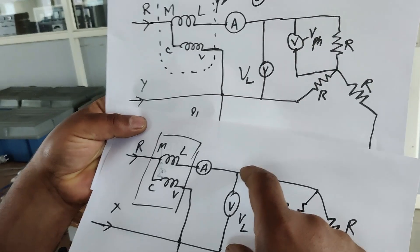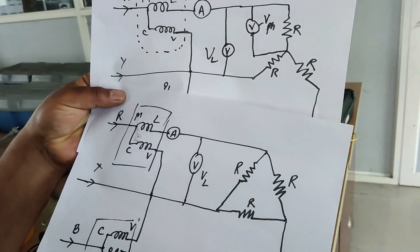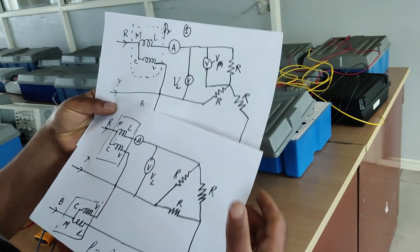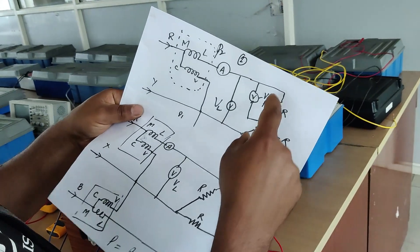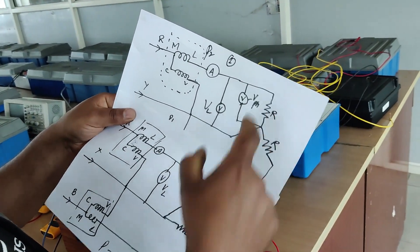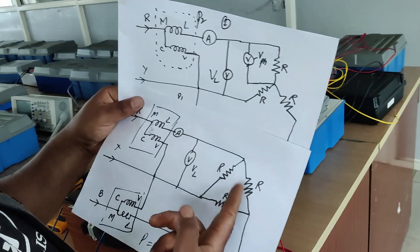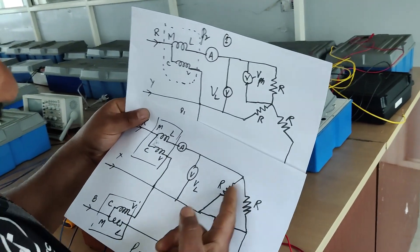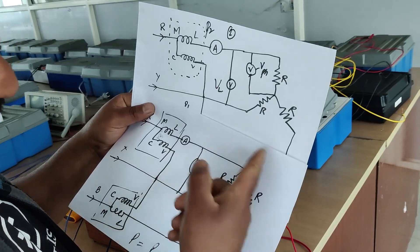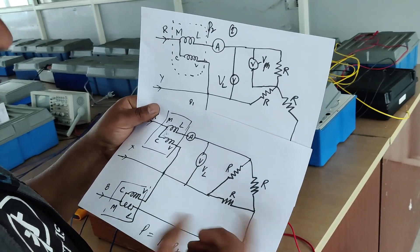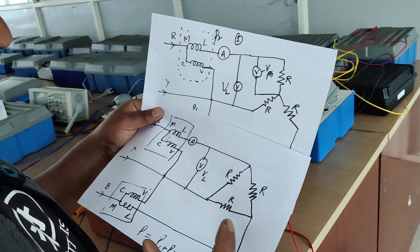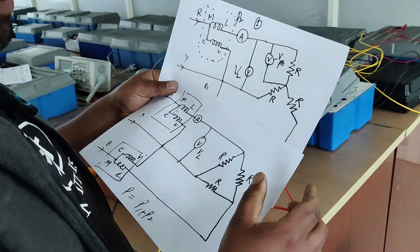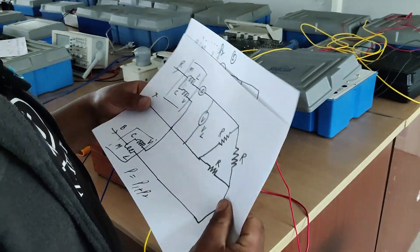Since line voltage is root-3 times the phase voltage, the power — which is V²/R or I²R — will be higher in the case of delta circuits. It comes out to be three times as compared to star connectivity. So let's verify the same.